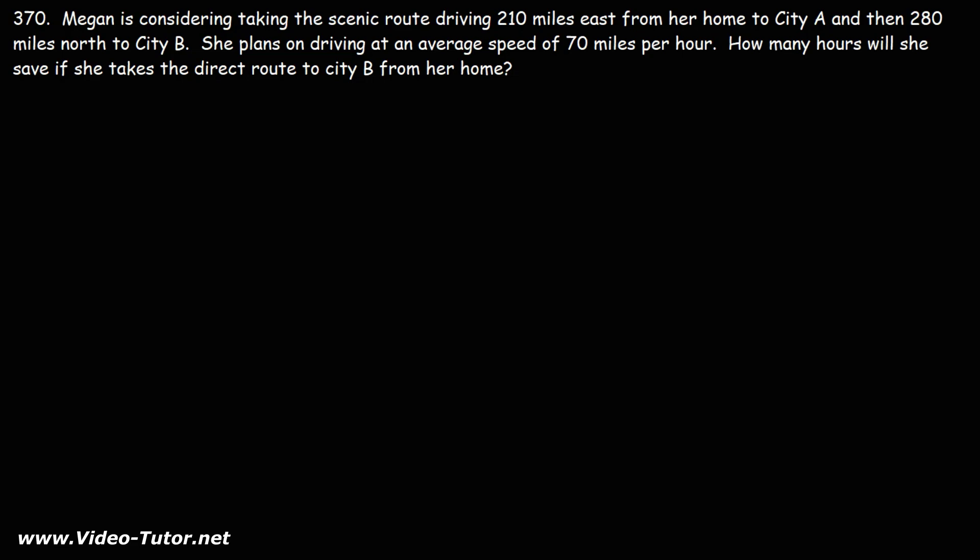Number 370. Megan is considering taking the scenic route, driving 210 miles east from her home to City A, and then 280 miles north to City B. She plans on driving at an average speed of 70 miles per hour. How many hours will she save if she takes the direct route to City B from her home?